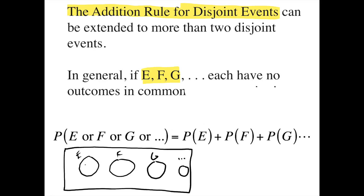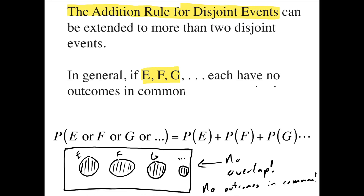In a Venn diagram, multiple mutually exclusive events would look like a bunch of non-overlapping circles. We find the probability of E or F or G or whatever other events we have by just adding up all their probabilities separately. The important thing is there's no overlap, meaning these events have no outcomes in common.